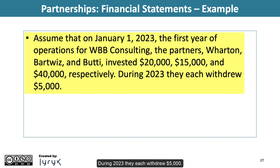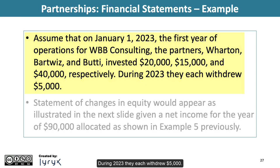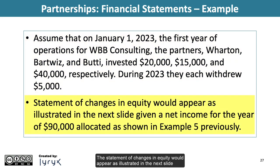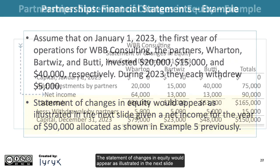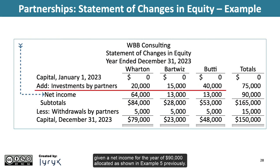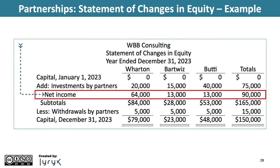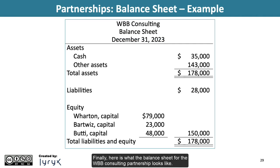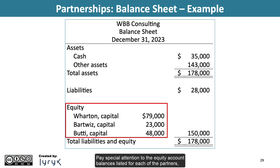During 2023, they each withdrew $5,000. The statement of changes in equity would appear as illustrated given a net income for the year of $90,000 allocated as shown in Example 5. Finally, here is what the balance sheet for the WBB Consulting Partnership looks like. Pay special attention to the equity account balances listed for each of the partners, the amounts of which are carried over from the statement of changes in equity.